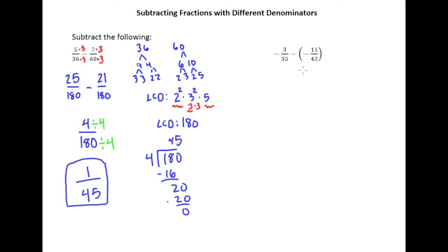Now the second example, you can see here that we've got this subtracting the opposite situation going on. Don't worry about that part quite yet. First, let's just focus on the denominators. So 35 I'll break down as 5 times 7.